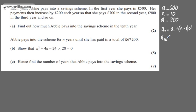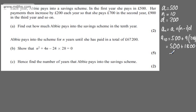So we can say the tenth term is going to be equal to the first term, which is £500, plus N minus 1, which is 9, multiplied by the common difference of £200. So the tenth term will be equal to £500 plus £1,800, giving £2,300. So that's the first part done for two marks.